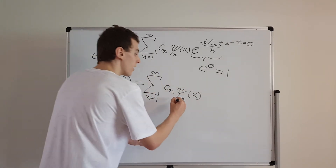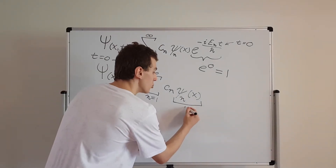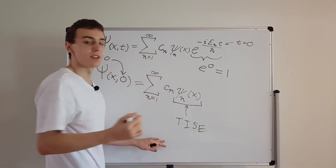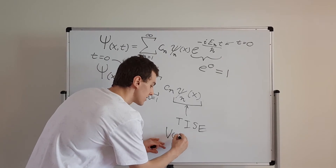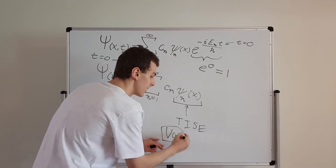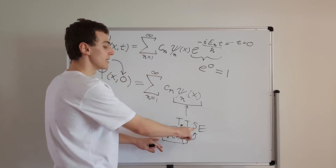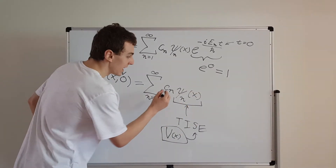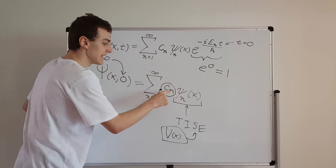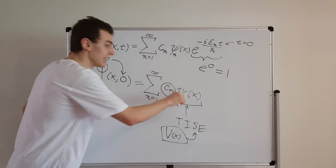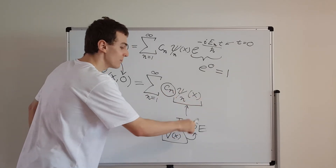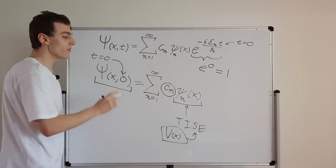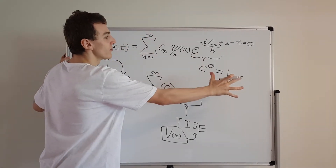We know the ψn's because they are solutions to the time-independent Schrödinger equation. If we know the potential V(x), we can find all those solutions — an infinite set of them. All we have to do is find the constants cn that multiply each solution. If we can match those constants to reproduce the initial wave function, we have everything we need to describe the entire time evolution of the system.